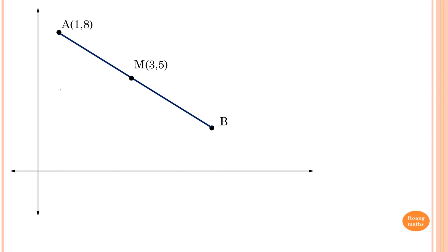Now a different type of question. Point A is (1, 8) and the midpoint M is given as (3, 5), but we need to find point B (x2, y2). We can solve this by inspection or by using formulas. Let's try inspection first: look at the x values — from 1 to 3 is 2 units across.